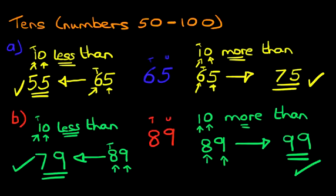So that was nice and easy. And that is how we do more than and less than of tens with numbers from 50 to 100.